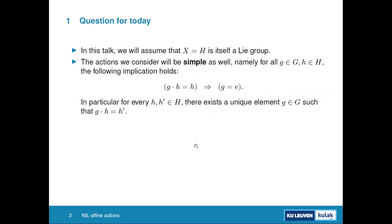Usually you want to add additional properties on the maps induced by a group element. For example, if your space is a Riemannian manifold, you might want these maps to be isometries. In this talk, the space on which we act is itself a Lie group, and we assume the action is simple — meaning stabilizers of any element are trivial.